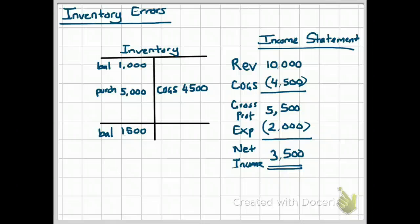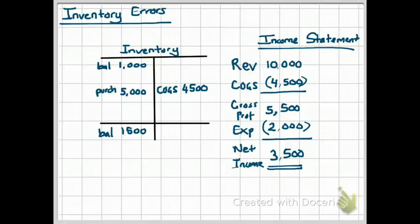Now this is an assumed income statement for the current year for this company. Revenue is $10,000. Cost of goods sold is $4,500, as shown in your inventory account. Gross profit is $5,500, which is revenues minus cost of goods sold. Your operating expenses are $2,000, which gives you net income of $3,500. Now let's take a look at the effect of inventory errors on this particular situation.